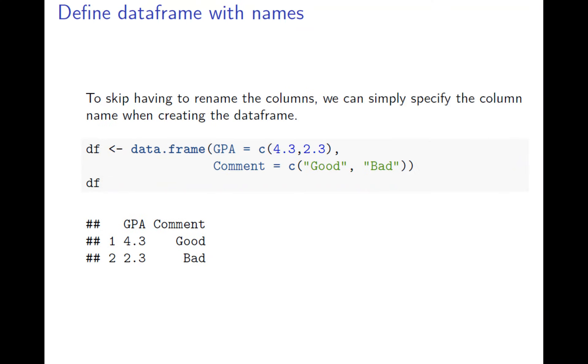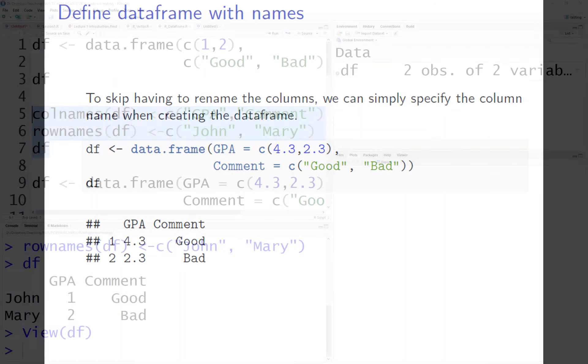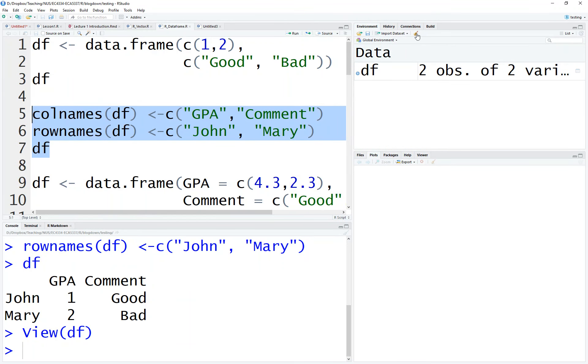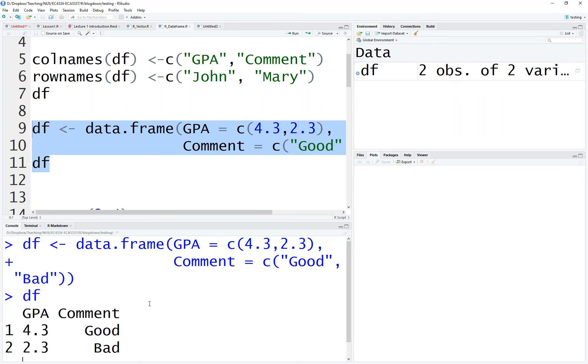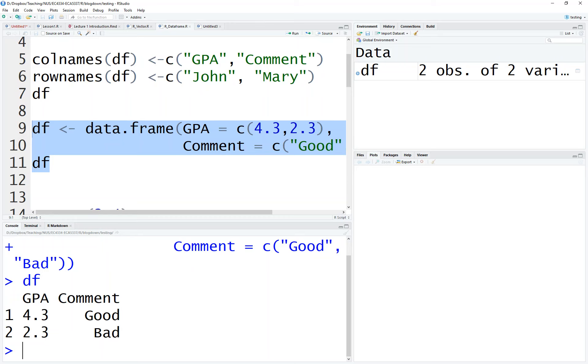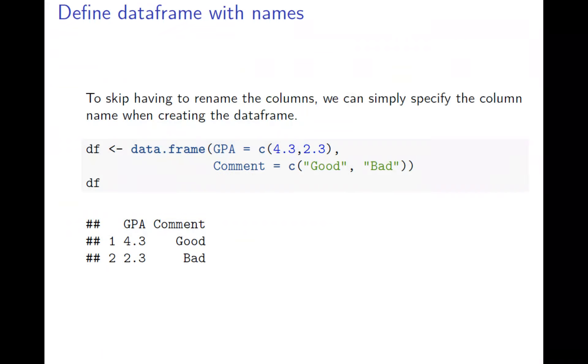Now the next thing is more simple. When you define the vector, you can give the name directly: GPA equals, Comment equals. The row names you still need to set, but the column names are already there. If you run this code directly, the column names are given. Let's clear everything and run it again. You have exactly what we see in this slide.